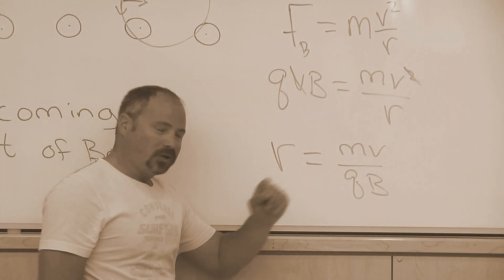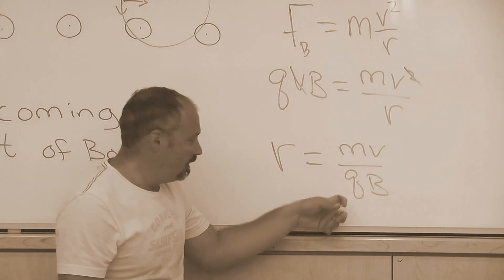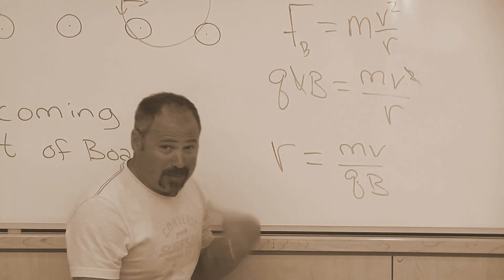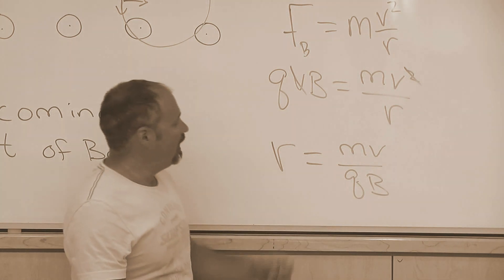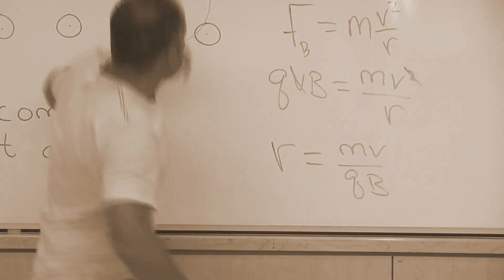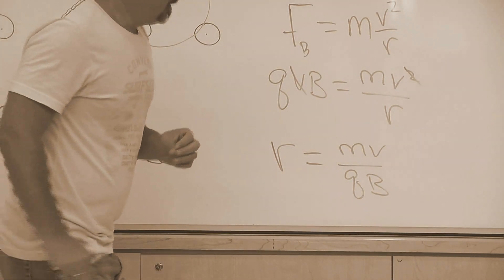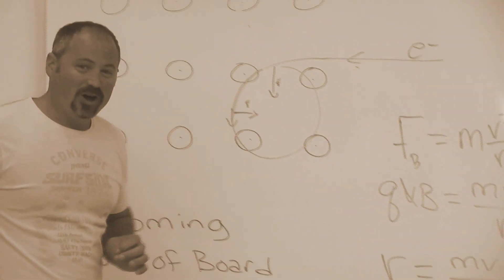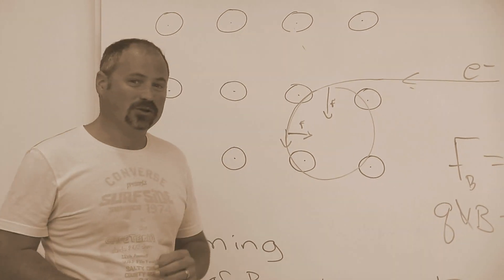So, plug in the mass of the particle, the speed that the particle is going at is charged, the magnitude of the magnetic field, and boom, you get the radius of this circle. So, that's the physics of what's going on. In the next video, I'll show you a little demonstration.